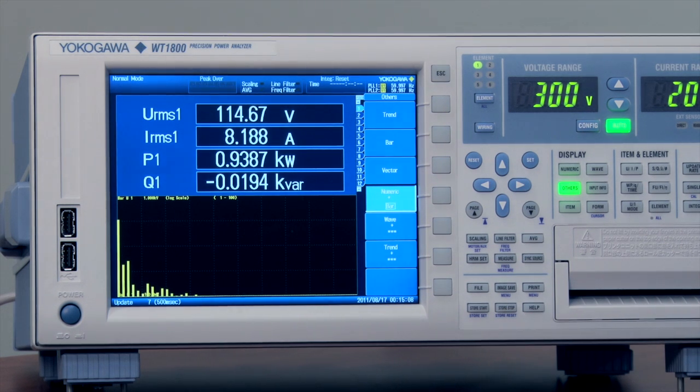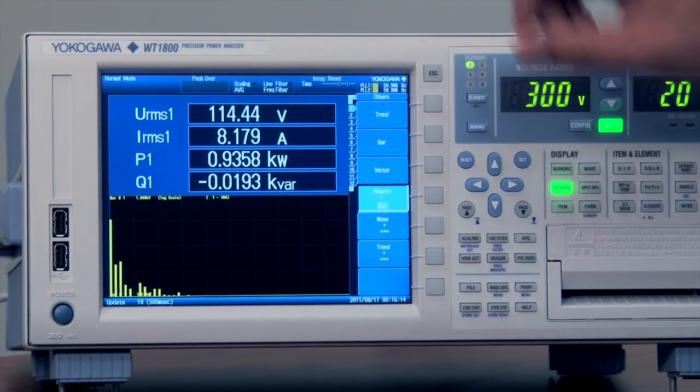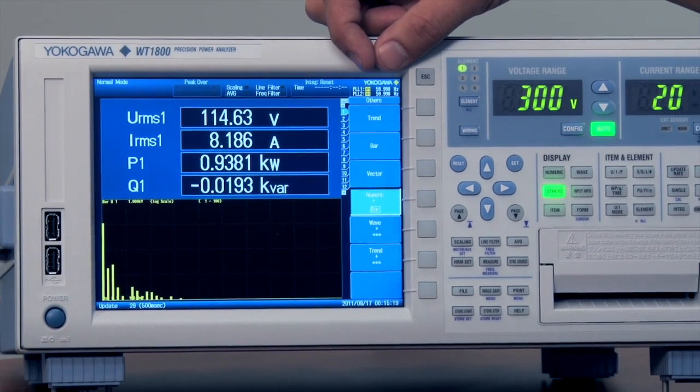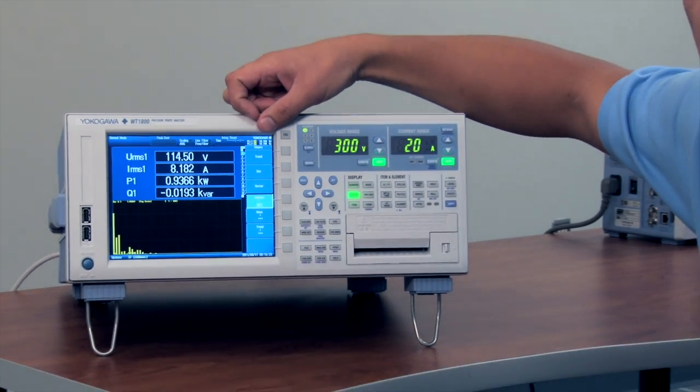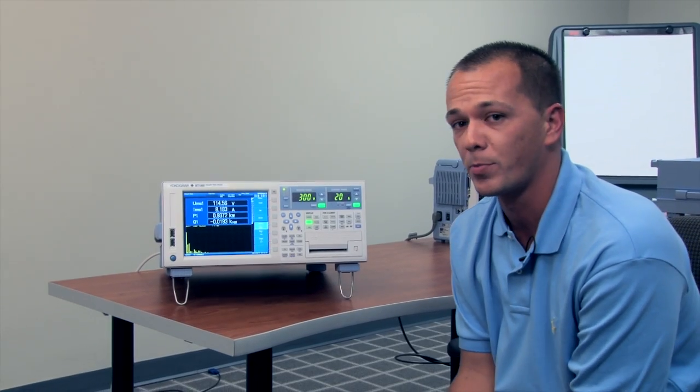The WT1800 offers the industry first single or dual harmonic package which allows you to phase lock up to two separate, for example, if you had a single input as well as an output, you want to phase lock both frequencies so your harmonic measurements are as accurate as possible.